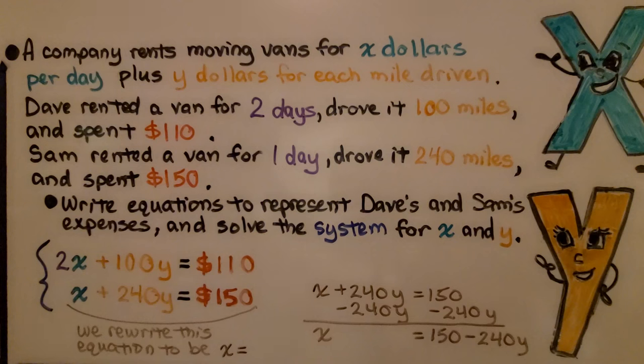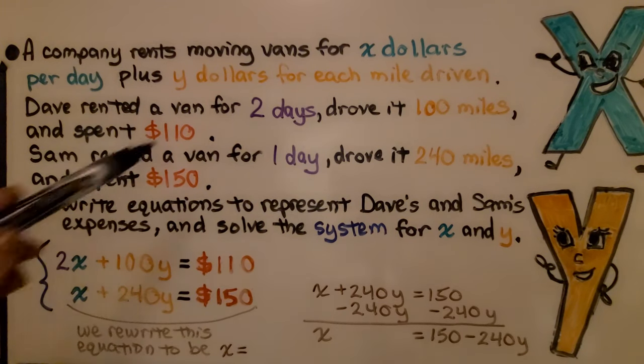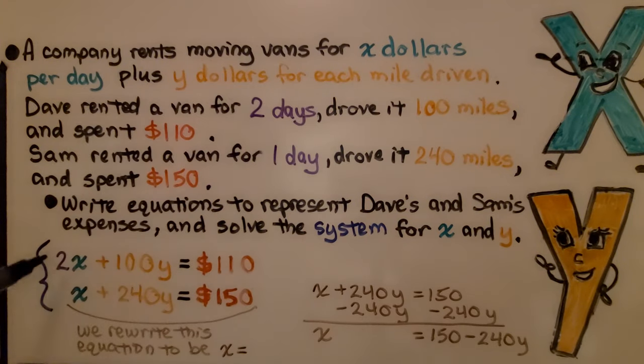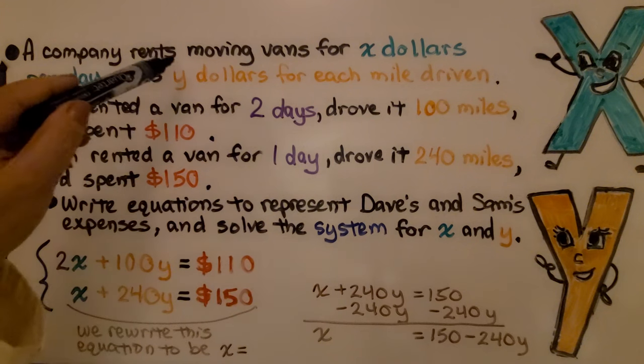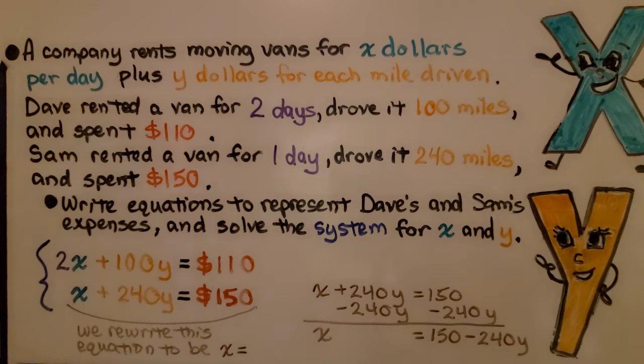Now, I'm going to walk you through one that's a little tricky. A company rents moving vans for x dollars per day plus y dollars for each mile driven. Dave rented a van for 2 days, drove it 100 miles and spent $110. Sam rented a van for 1 day, drove it 240 miles and spent $150. Write equations to represent Dave's and Sam's expenses and solve the system for x and y.